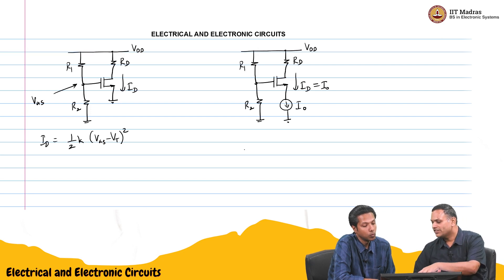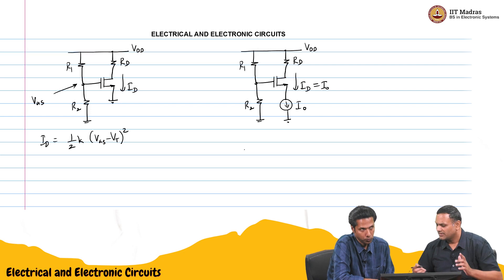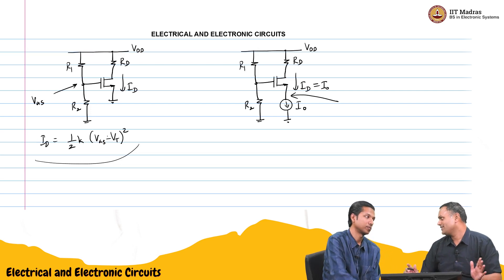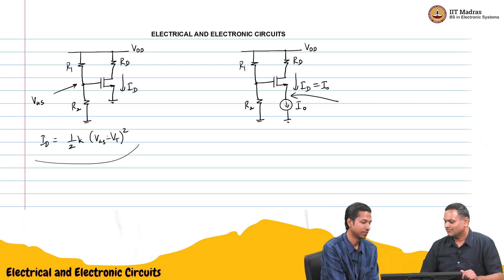Then the voltage across the current source will be this gate voltage R2 by R1 plus R2 times Vdd minus Vgs. You can calculate Vgs from this equation. I naught equal to half K into Vgs minus Vt the whole square.